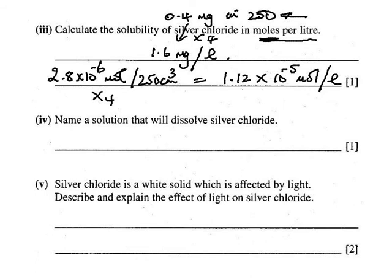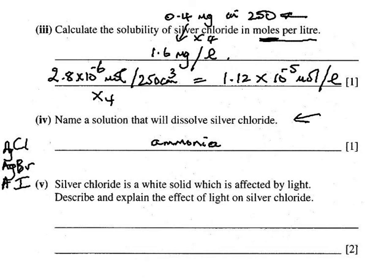Dilute ammonia solution will dissolve silver chloride but not silver bromide. Concentrated ammonia will dissolve both silver chloride and silver bromide, but not silver iodide. The effect of light on silver chloride is that it darkens from white to dark grey, because light reduces the silver ions to silver metal.